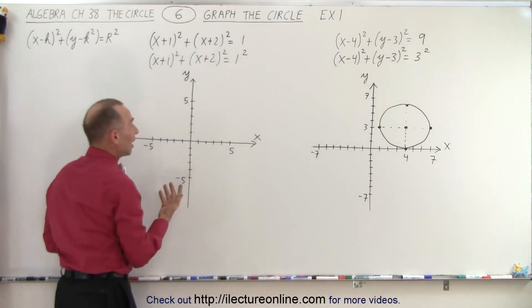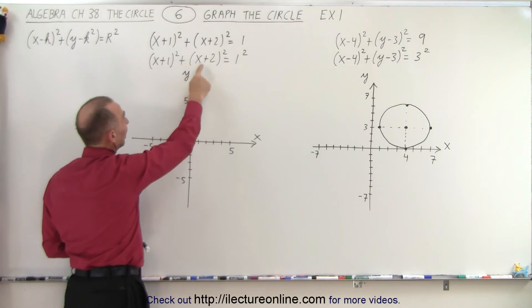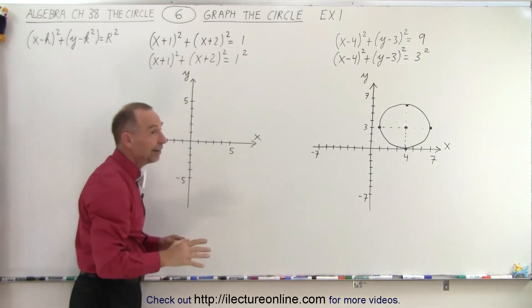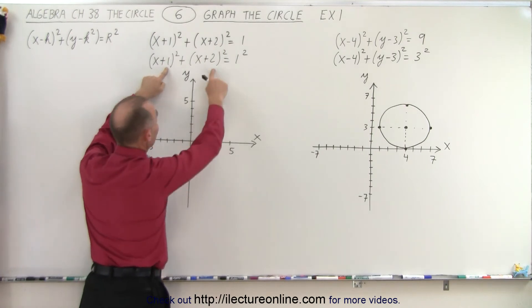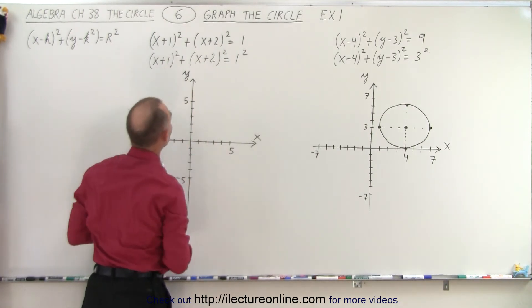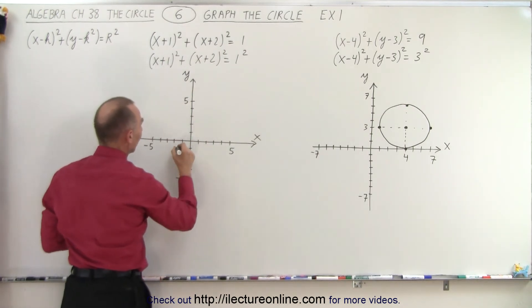Now we go over here, we do the same thing, but notice instead of negative signs we have positive signs there. And since the general equation shows negative signs, that means that h and k in this case are negative, not positive. So h is at -1 and k is at -2.